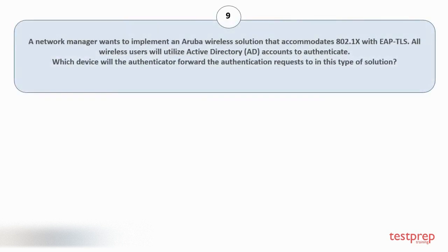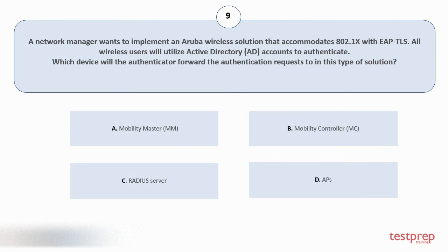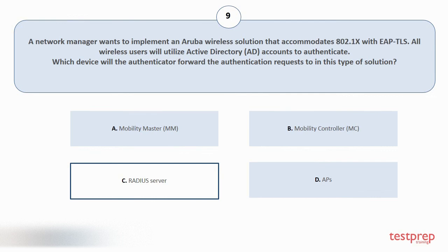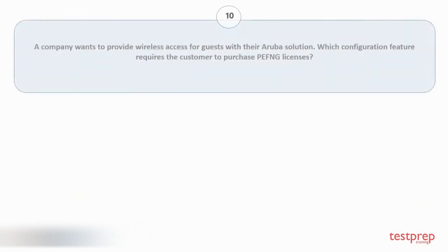Question number 9: A network manager wants to implement an Aruba wireless solution that accommodates EAP-TLS. All wireless users will utilize Active Directory accounts to authenticate. Which device will the authenticator forward the authentication request to in this type of solution? Option A: Mobility Master. Option B: Mobility Controller. Option C: RADIUS server. Option D: AP. The correct answer is option C.